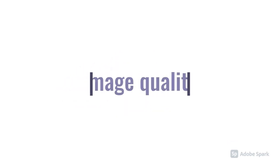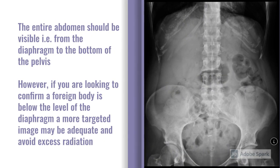Going back to the abdominal x-rays themselves, let's have a quick look at image quality. Ideally you want the entire abdomen visible on the film — from the top of the diaphragm right down to the bottom of the pelvis. But sometimes if you're doing an x-ray to look for a foreign body, one of the key things with ingested foreign bodies is whether they're below the level of the diaphragm, i.e. in the GI tract rather than the trachea or the bronchi. So a high abdominal x-ray can reduce the radiation dose and still answer the clinical question.